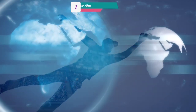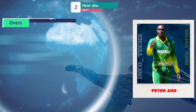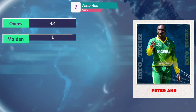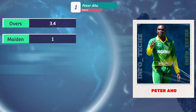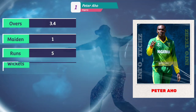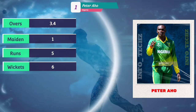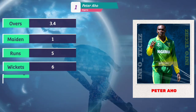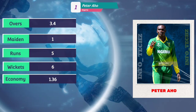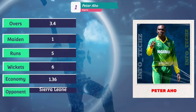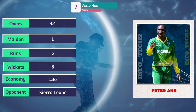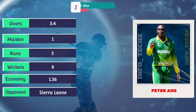At number one, Peter Aho from Nigeria — 3.4 overs, one maiden, five runs, six wickets. What a spell he bowled! An economy of just 1.36 runs per over. The opponent was Sierra Leone.